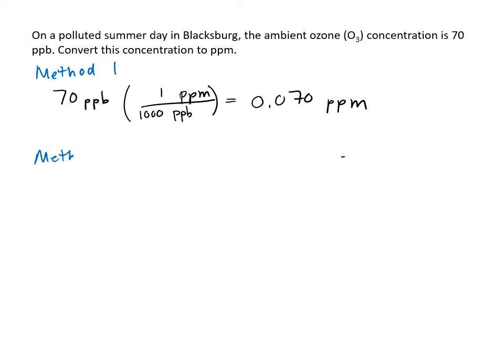Method two, let's say I don't want to go through those gymnastics in my head, and I want to do this in a fail-safe way. What I can do is divide by 1 billion, 10 to the 9th parts per billion, to get that to cancel out, and multiply by 10 to the 6 parts per million ppm. It's like multiplying and dividing by 1, and I get 0.070 ppm.